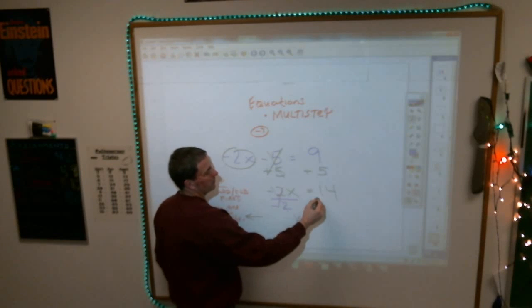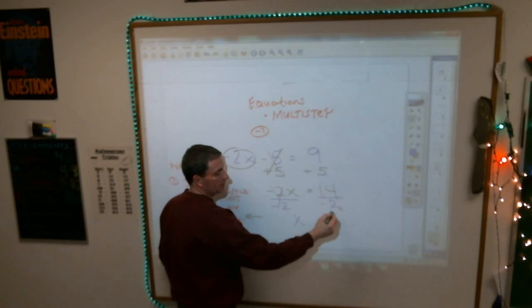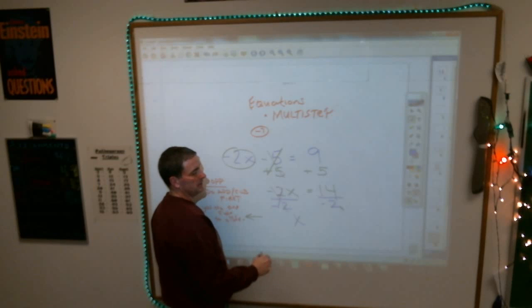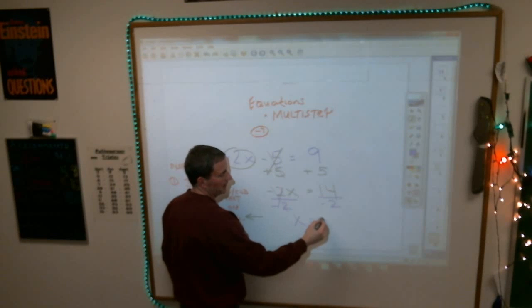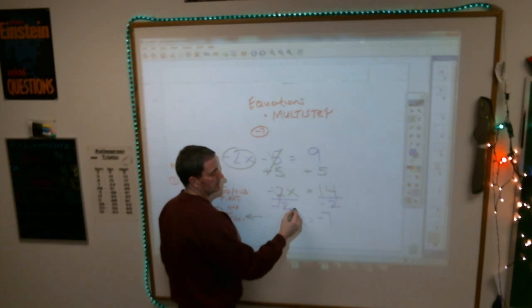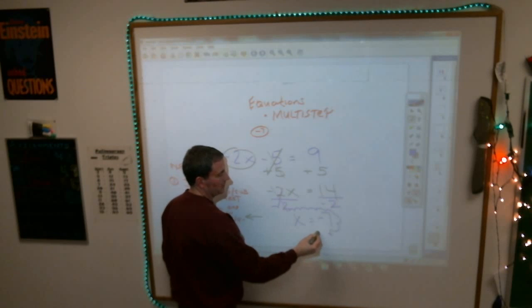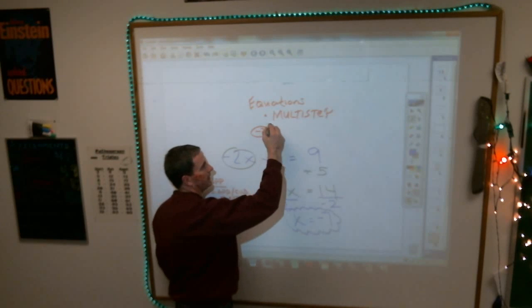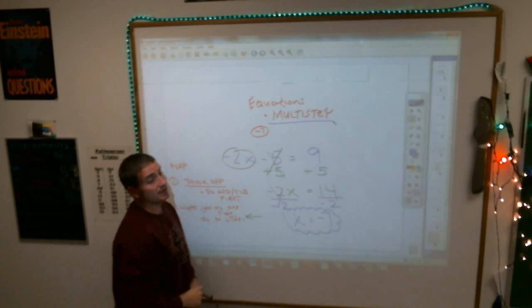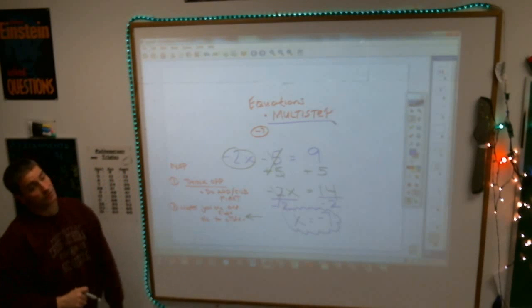But you also must do that to the other side as well. 14 divided by negative two is a negative seven. That is the multi-step equation. Called multi-step because it took me two steps to solve it.